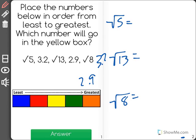Starting with root 5. The way that I always do this is I think of whole perfect roots. So I know root 4 is equal to 2 and I know root 9 is equal to 3. So in between those we have five numbers: 5, 6, 7, 8, and 9.